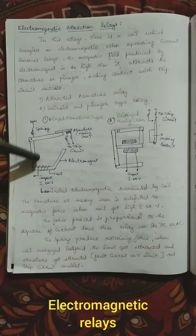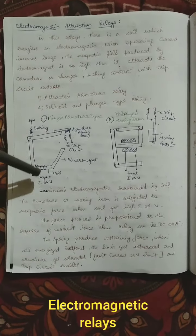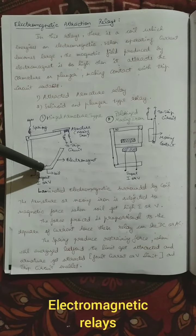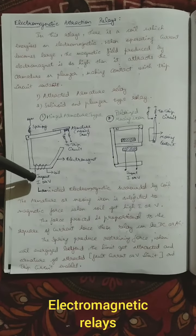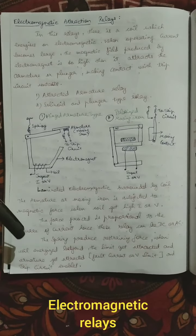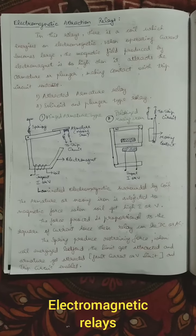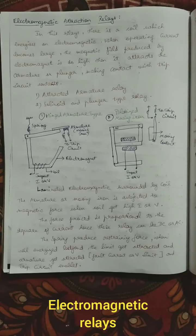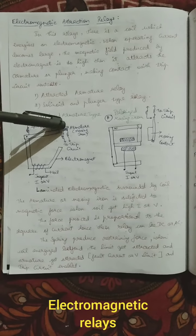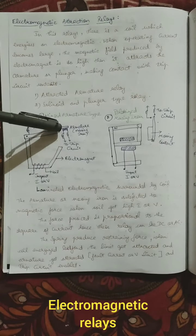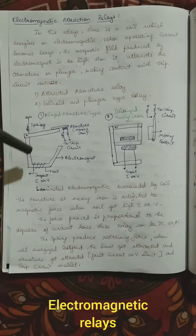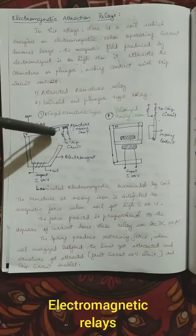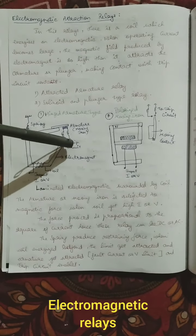There is a coil which gets energized by the electromagnetic field. When the operating current is larger than the set value — due to the fault current — an electromagnetic field is produced. As the electromagnetic field is produced, the armature gets attracted. The armature is a moving iron piece, and the force of attraction attracts the armature and triggers the tripping circuit.